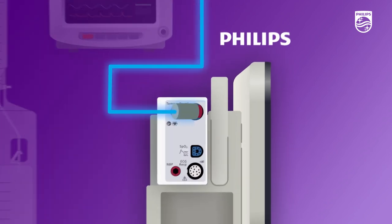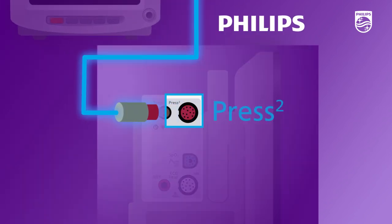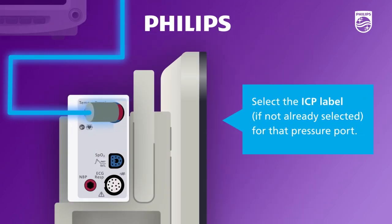With the interface cable connecting the ICP monitor to the Philips monitor pressure port, select the ICP label, if not already selected, for that pressure port.